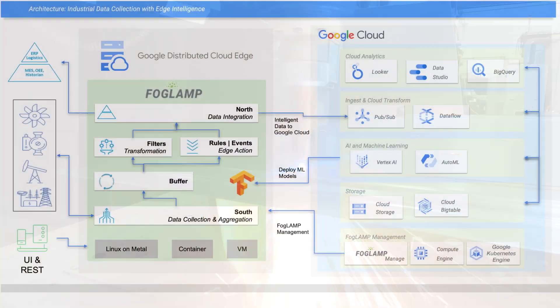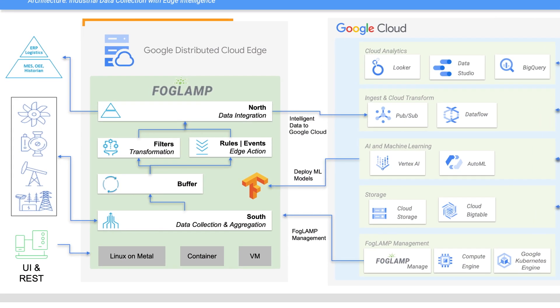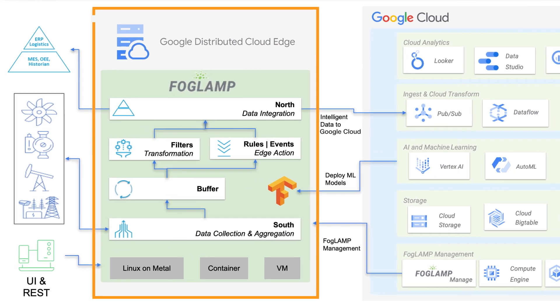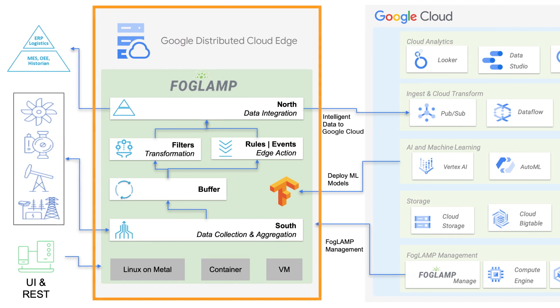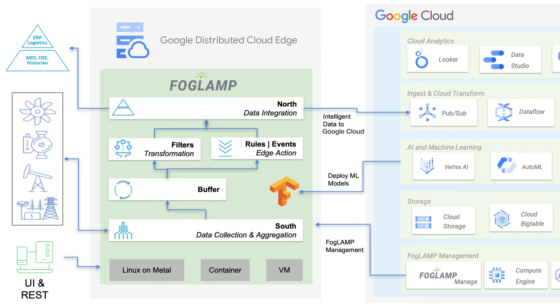This prevents the assembly of defective parts, increasing both quality and yield while reducing overall manufacturing costs. So how does Dianomic's FogLamp work? Google Cloud, Google Distributed Cloud Edge and FogLamp deliver a complete edge MLOps industrial solution.